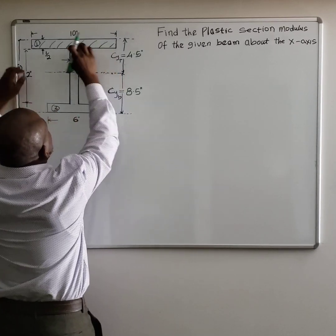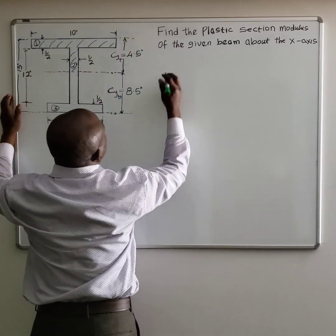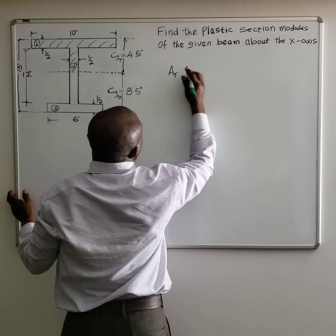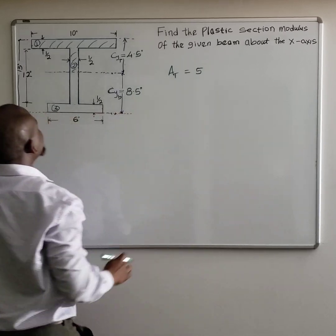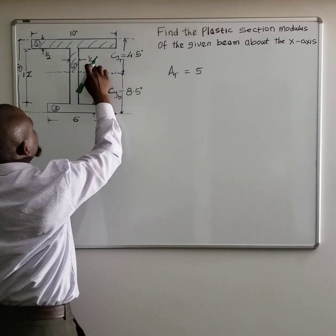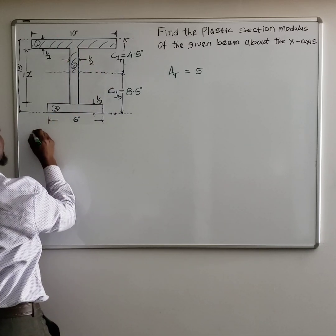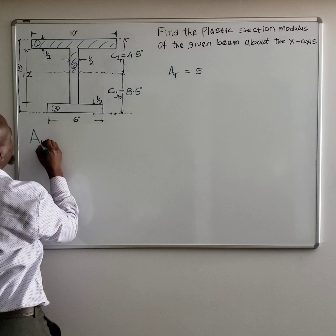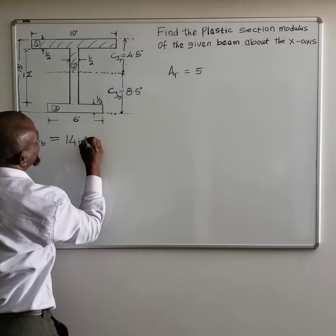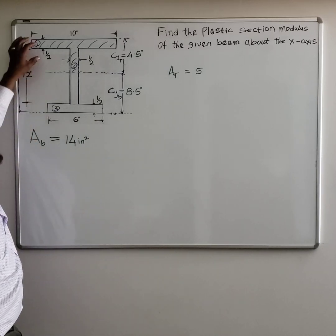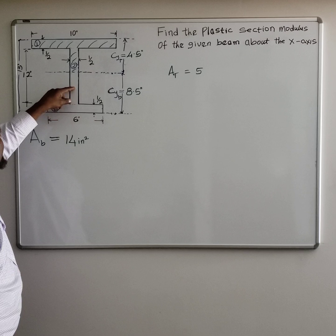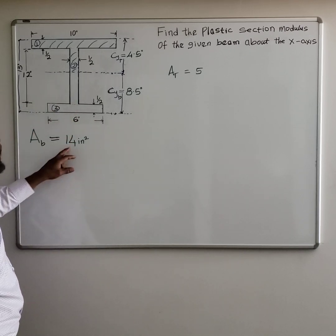We know that the area of the top rectangle is 5 square inches. Now, let's assume we don't have this value yet, but we know the total area of the beam is 40 square inches. So we know the area of the top section is 5. Because 5 plus 6 is 11, plus 3, that's 14.